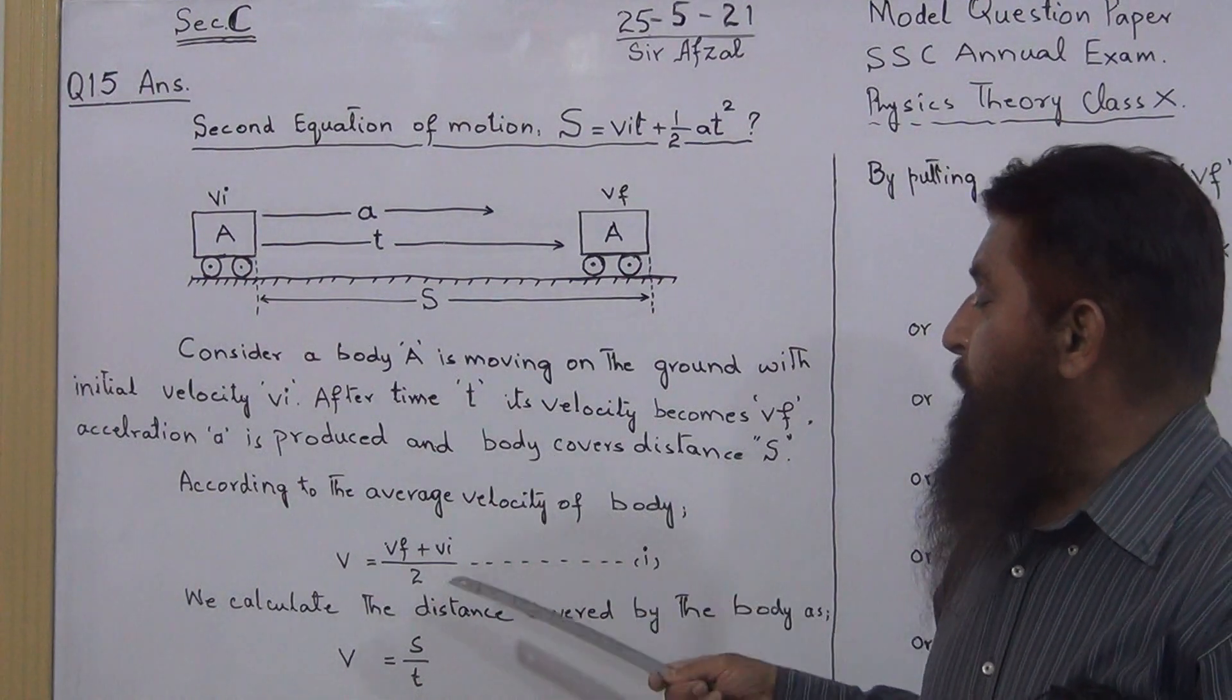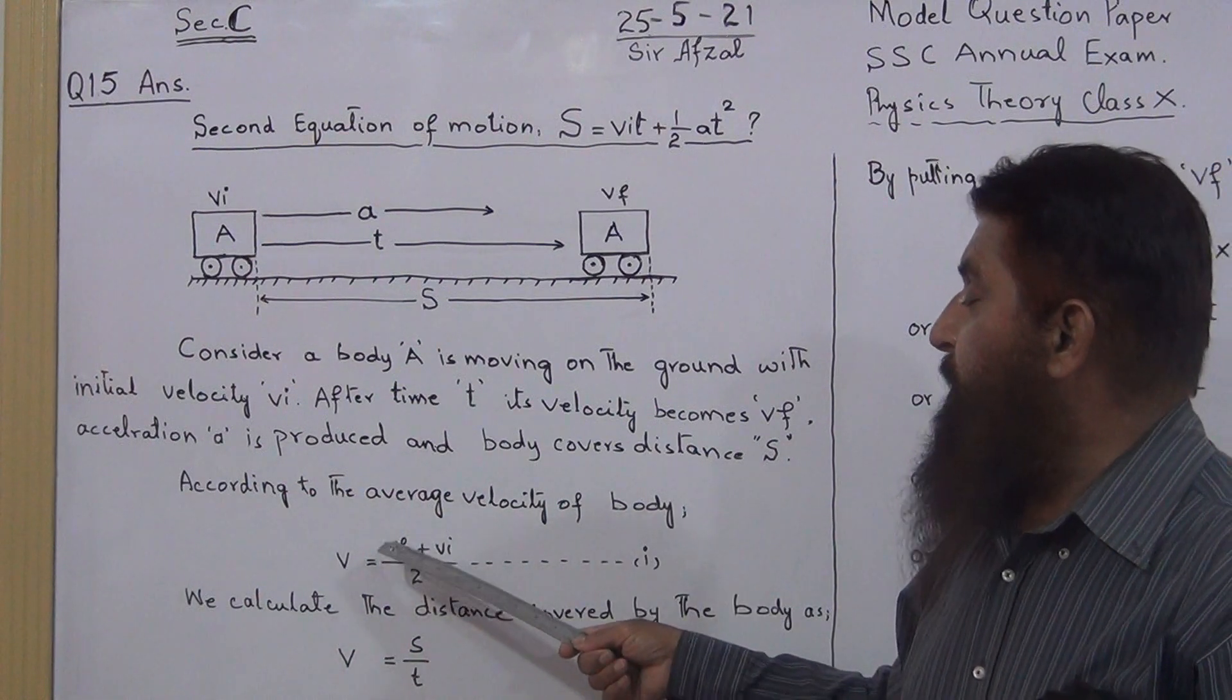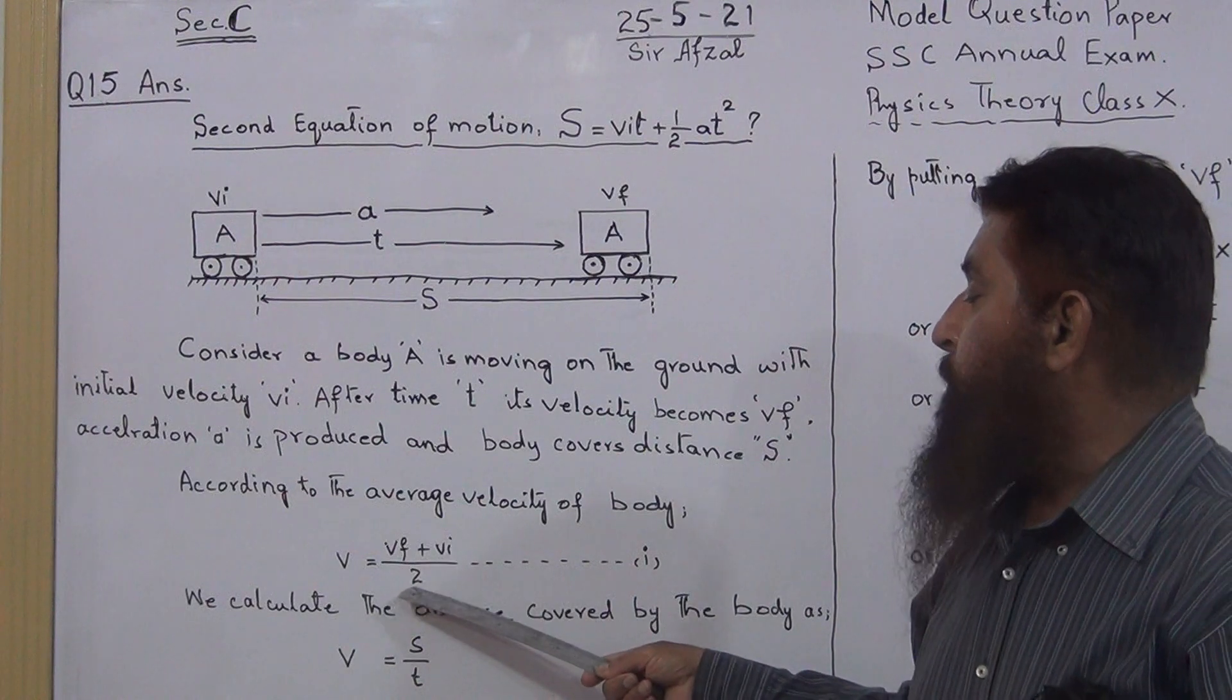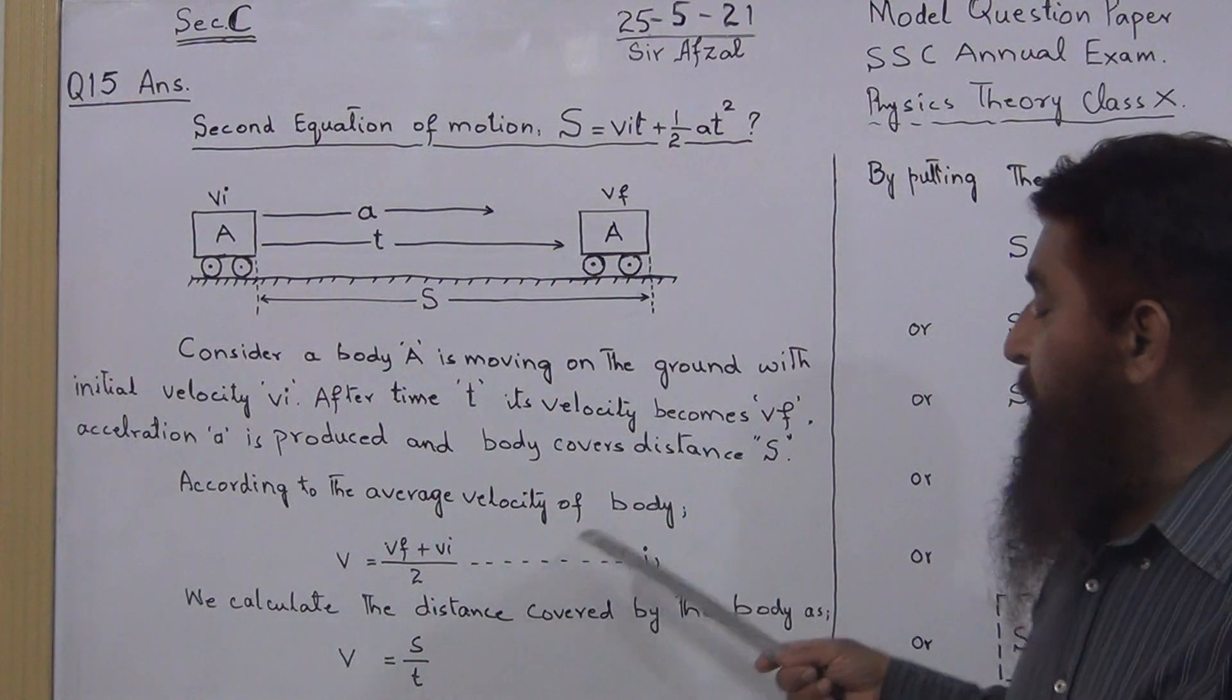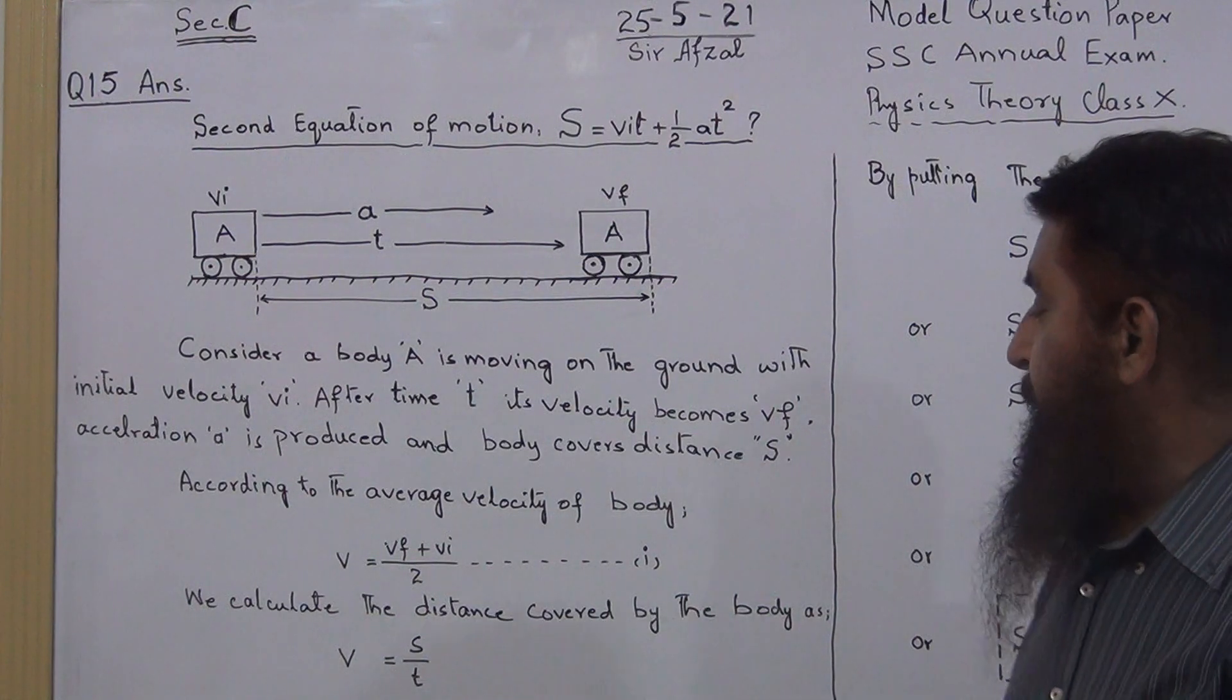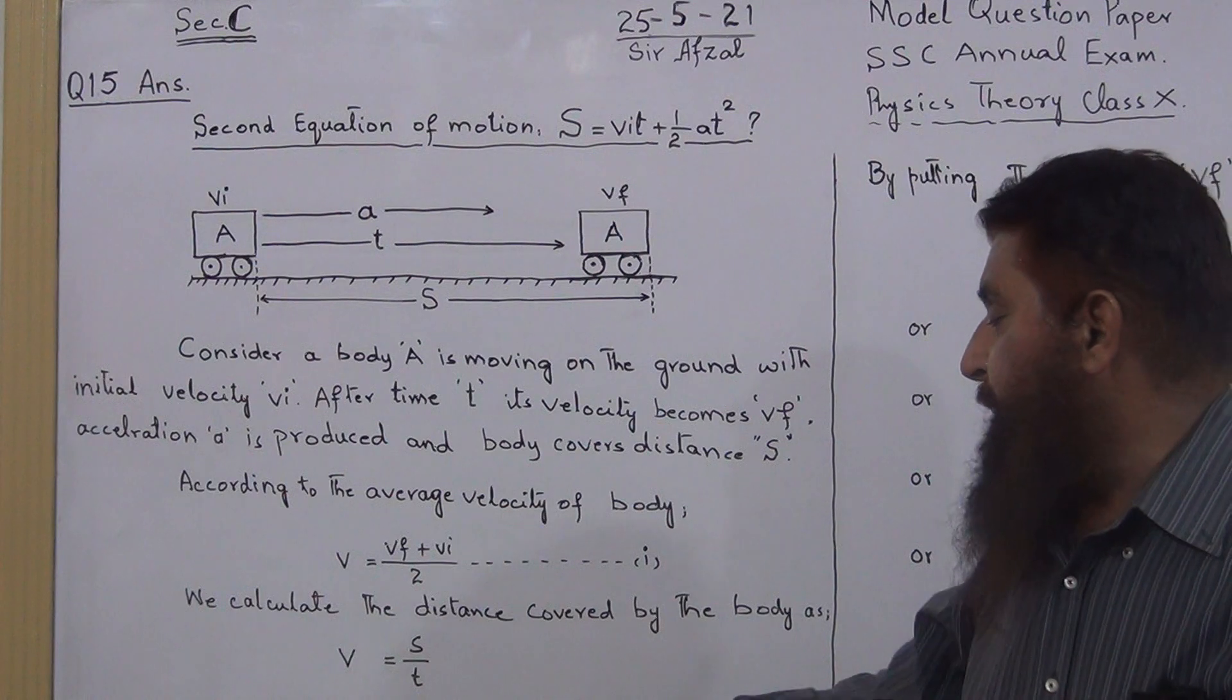Now according to the average velocity of the body, average velocity means sum of the quantities divided by the number. So there are two quantities VF and VI, we will add it and divide by 2. So it is average velocity. This is equation number 1. We calculate the distance covered by the body as V = S/T. As you know S = VT, we multiply the equation number 2.